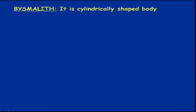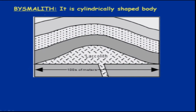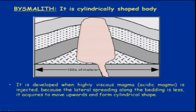Another form is termed as bysmalith. It is a cylindrical-shaped body, similar to the lopolith, but found as an intrusive body within a dyke at depth, with some intrusion at the top as shown in the figure. It is mostly developed when highly viscous, acidic magma is injected below due to lateral spreading along the bedding, then moves upward to form a cylindrical shape.